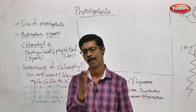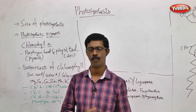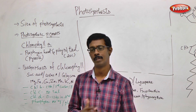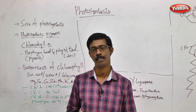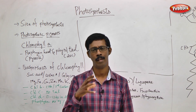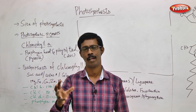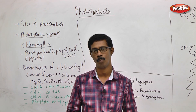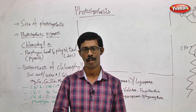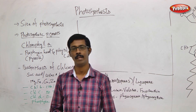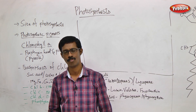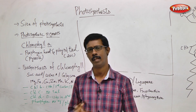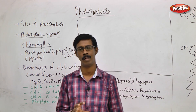The other pigments - Chlorophyll B, C, D, E, xanthophylls, phycobilins, whatever the pigments - are called accessory pigments. Why are they called accessory pigments? They do not directly perform the electron excitation. Instead, that energy is transferred to Chlorophyll A.